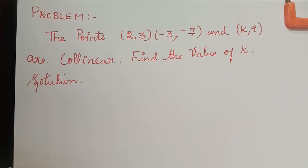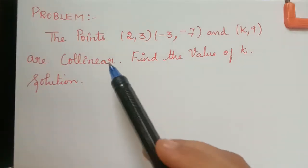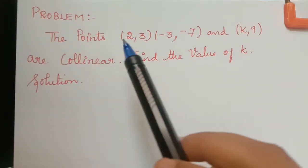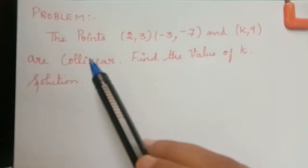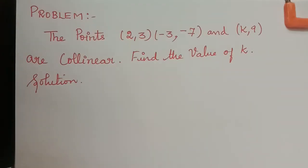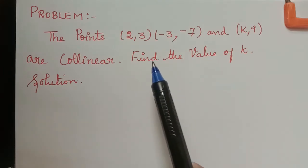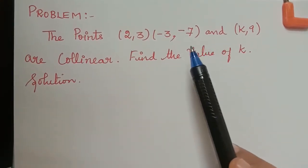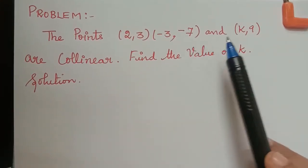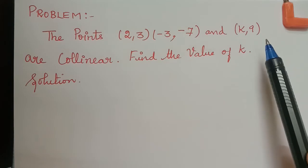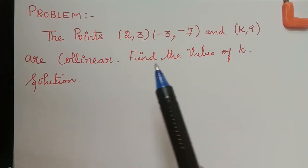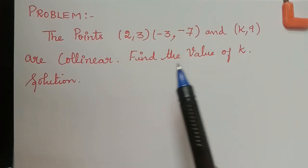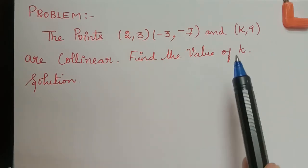Hello students. Under the topic coordinate geometry, we are now dealing with the next problem. The problem is: it is given that the points (2, 3), (-3, -7), and (k, 9) are collinear. Find the value of k.